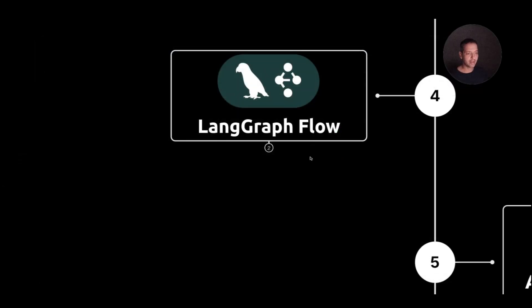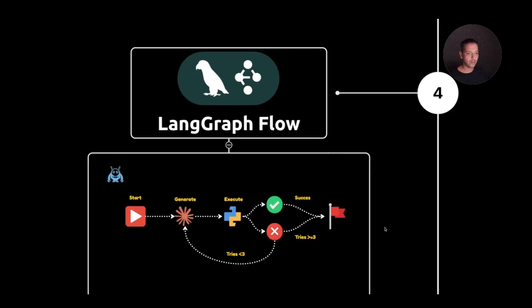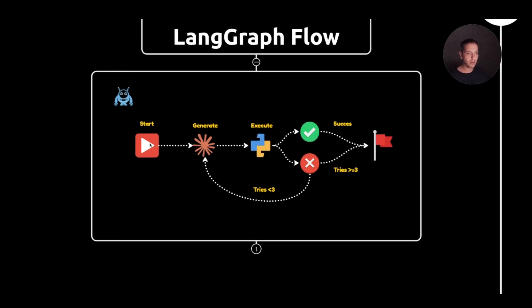Let's look at how to set up an agent in LangGraph to execute code with these two methods. Here's an overview of the flow: we start with a generate node to produce Python code, then execute it with either exec or subprocess.run. If the code executes successfully, we end. If not, and the number of tries is less than three, we regenerate and re-execute, hopefully succeeding within three attempts.